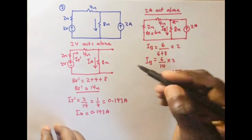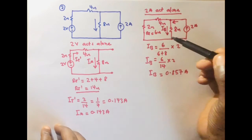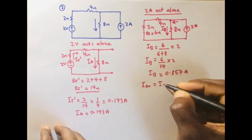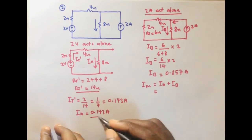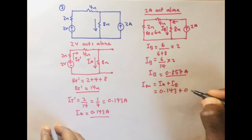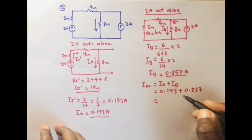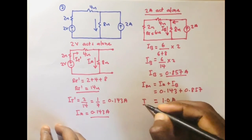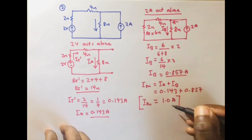The currents IA and IB are flowing in the same direction. So the total current through the 8-ohm resistor is I_8Ω = IA + IB = 0.143 + 0.857 = 1.0 amperes. The total current flowing through the 8-ohm resistor is 1.0 amperes.